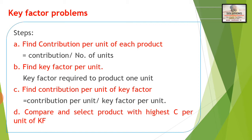The steps followed in key factor problems are: First, find the contribution per unit of each product. If you have multiple products, calculate contribution per unit for each. Contribution per unit equals total contribution divided by total number of units. Second, find the key factor per unit. Key factor per unit means the key factor required to produce one unit. For example, if labor is the key factor, how many labor hours are needed to produce one unit?